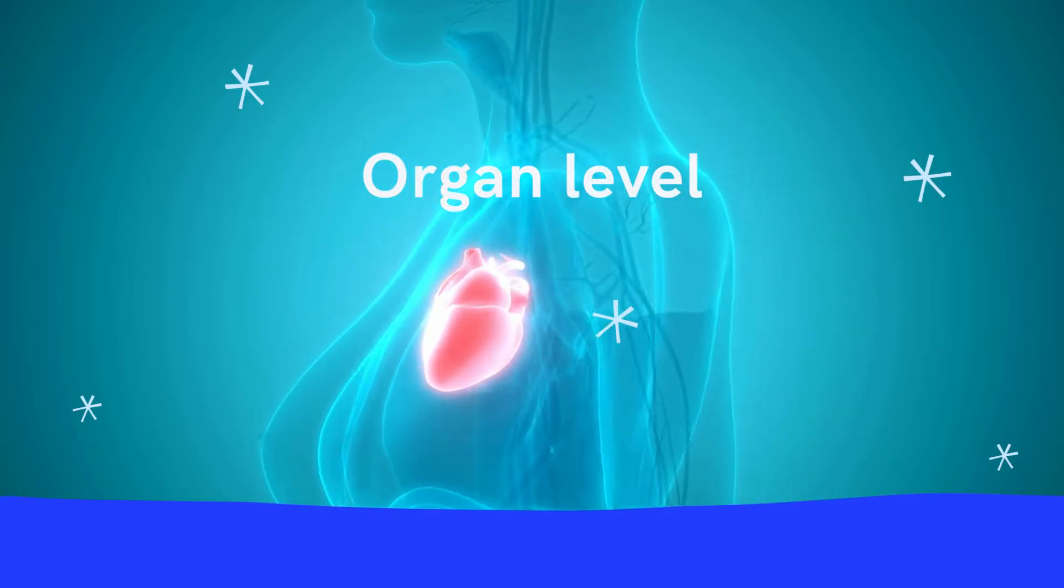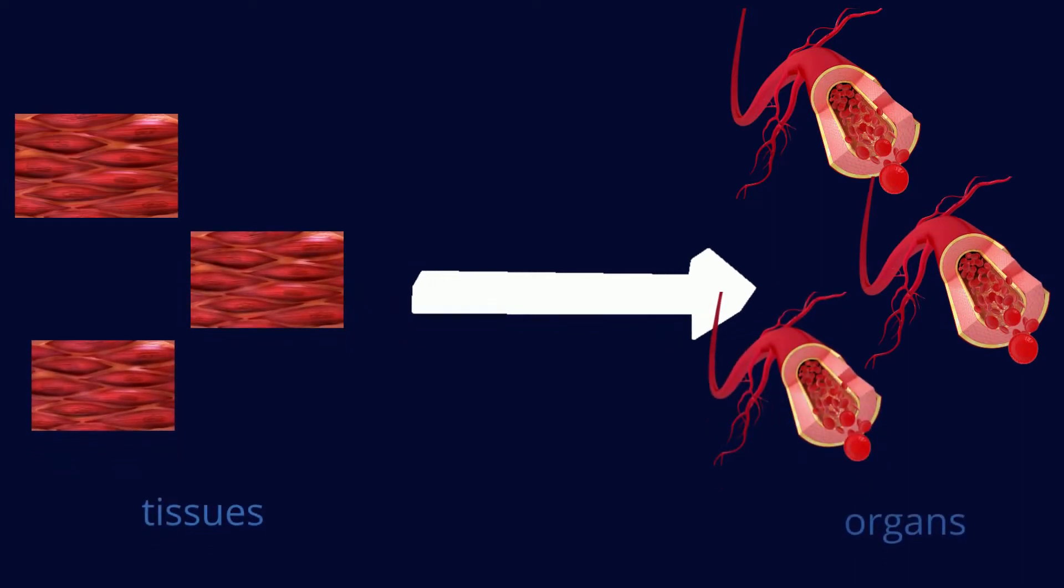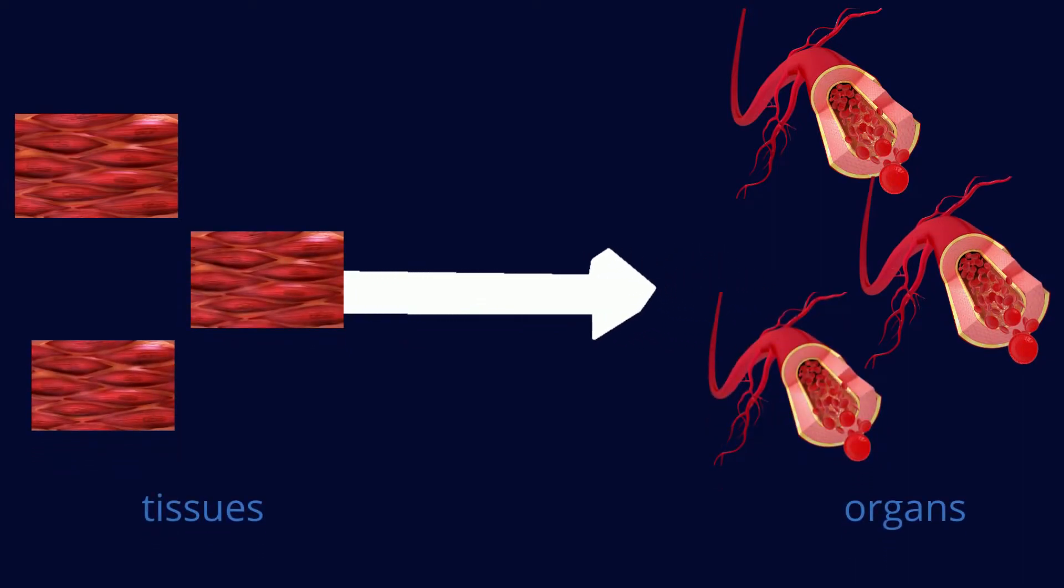The next level of structural organization is the organ level. Our organs, such as the heart, the lungs, the kidneys, etc., are formed by two or more different types of tissues. For example,